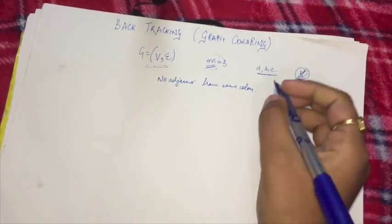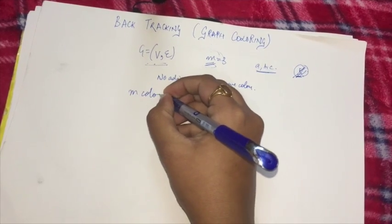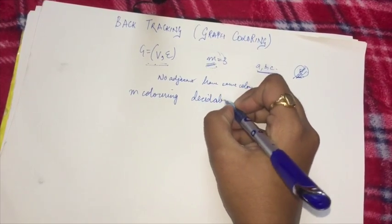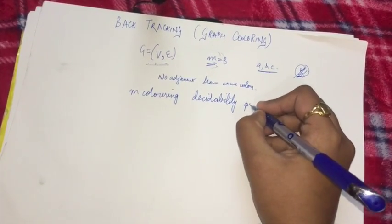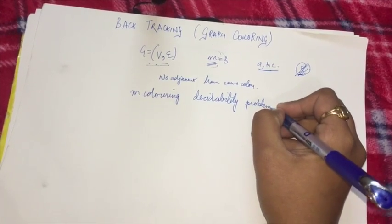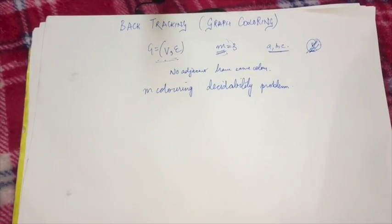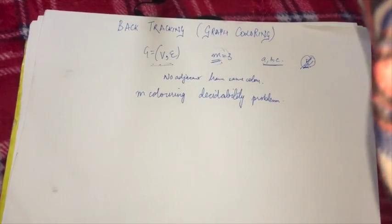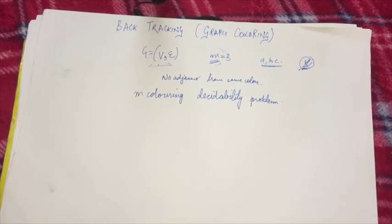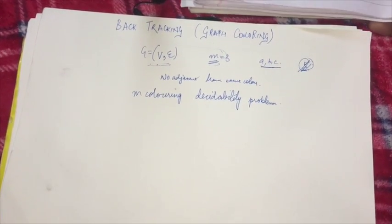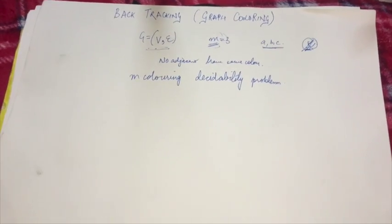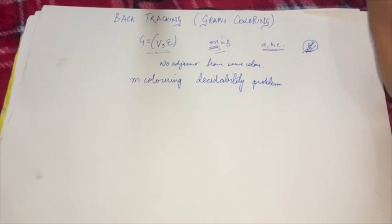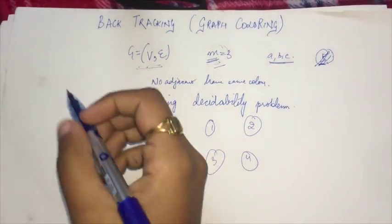This problem is also known as the M-coloring decidability problem. It asks for the smallest integer M for which the graph can be colored. This integer is referred to as the chromatic number of the graph — the smallest number of colors with which the graph can be colored.